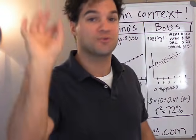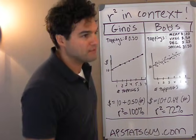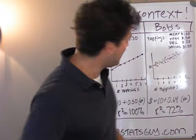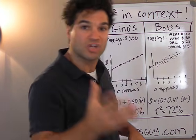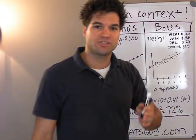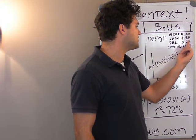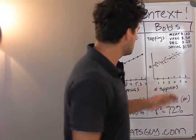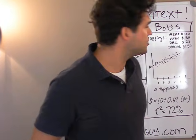So I'm going to tell you a tale of two pizzerias. There are two pizza places in my town: Gino's and Bob's. Different kinds of places. Gino's cheese pizza starts at $10, and every topping costs $0.50. Bob's cheese pizza also starts at $10, but he differentiates his topping prices — meat's a buck, veggies are $0.50, doubling a topping is only $0.25, but a special topping like lobster or exotic cranberries is $1.50. So all of his toppings aren't exactly $0.50 each.